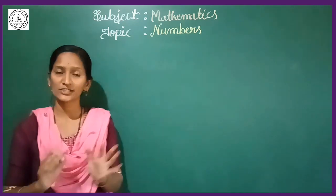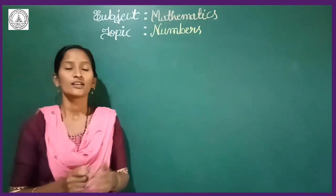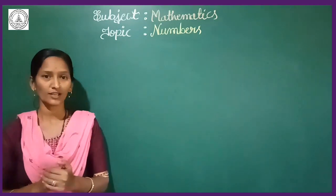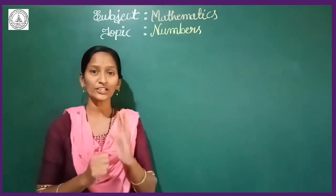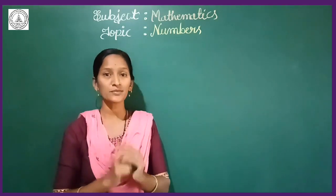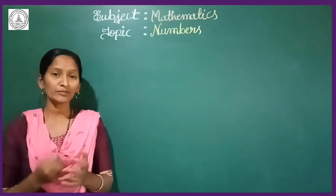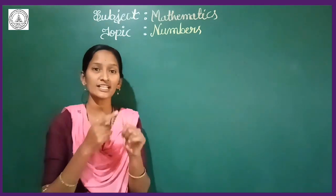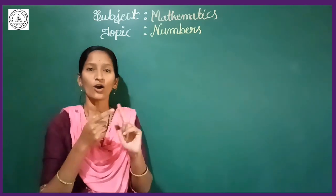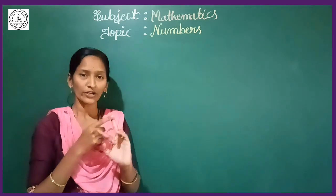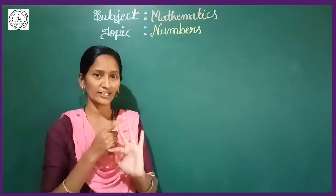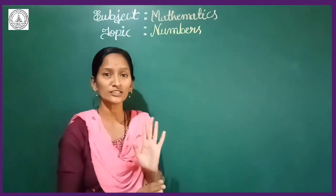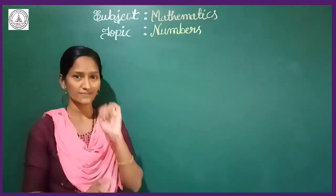Now come to our next concept — the types of numbers. In class one, already you learnt the types of numbers. Tell me what are those. The first one is even number, odd number, cardinal numbers, and ordinal numbers. These are the 4 types of numbers you already learnt in class one.